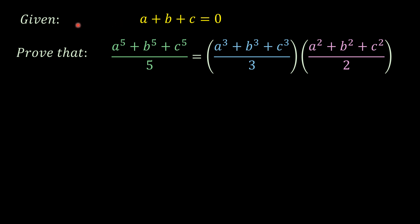We have that it's given a plus b plus c equals zero and we have to prove that for any real number a to the 5 plus b to the 5 plus c to the 5 over 5 is equal to this product here.